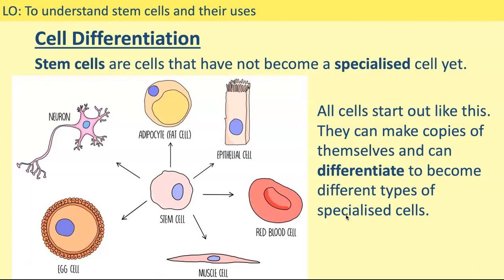Moving on to stem cells now. Stem cells are cells that have not yet become specialised. All cells start out as stem cells and they can make copies of themselves and can differentiate to become different types of specialised cells. There is another screencast on specialised cells. Cells start off as stem cells, undergo cell differentiation, and become specialised cells that are specialised to perform a certain function.